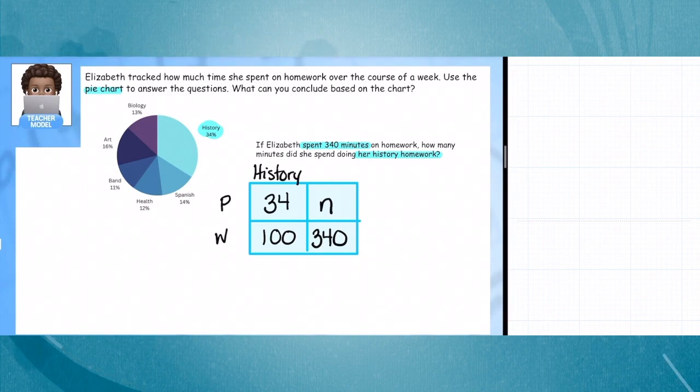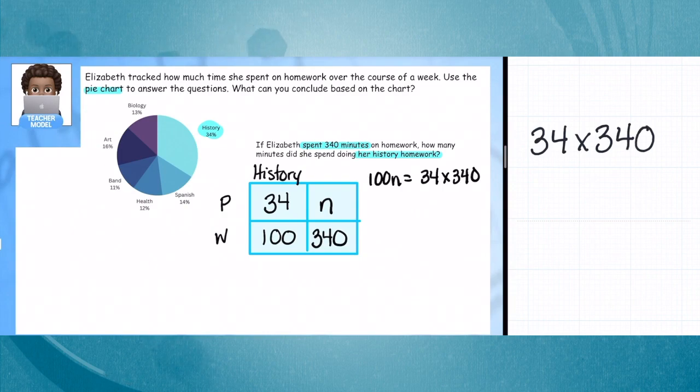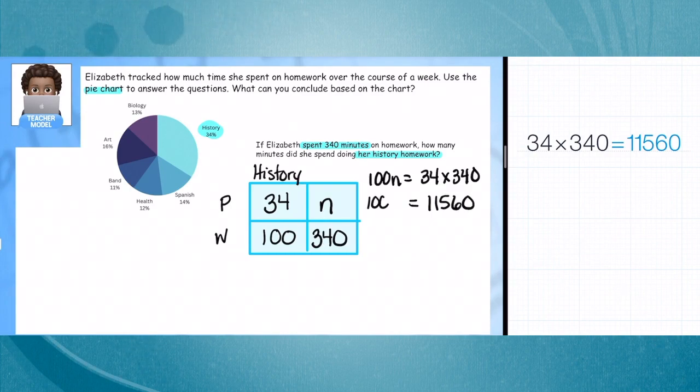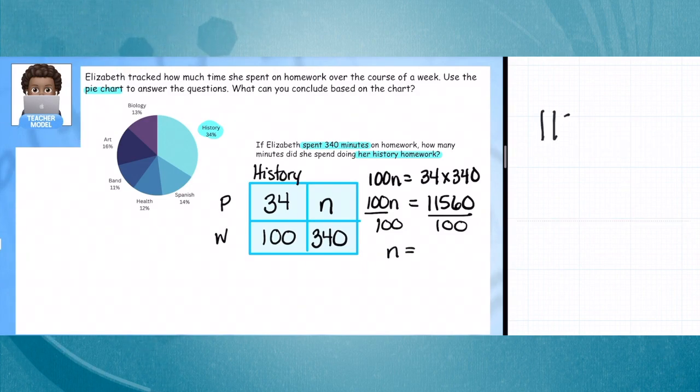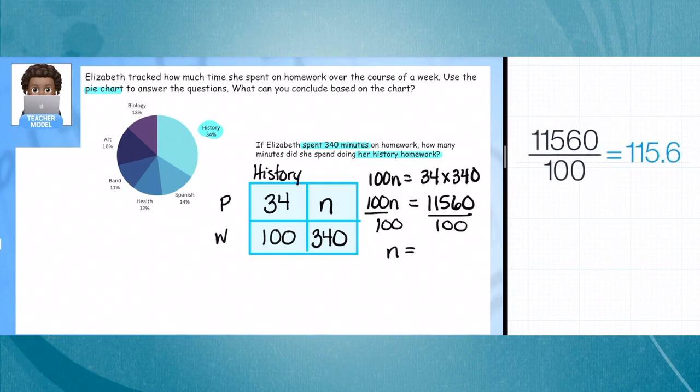Now that we have this, we're going to cross multiply and we get 100n is equal to 34 times 340. We have our calculator here and that is equal to 11,560. So 100 times the number is equal to this big number. Let's divide by 100 to isolate our variable. 11,560 divided by 100 is equal to 115.6 minutes. So that's how much time she spends on her history homework.